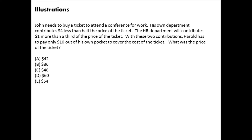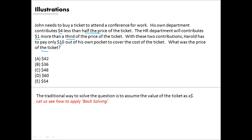John needs to buy a conference ticket. His own department contributes four dollars less than half the price. The HR department contributes one dollar more than a third of the price. With these two contributions, John has to pay only ten dollars. We need to find the ticket price. After arranging the five options in order: 36, 42, 48, 54, 60 — we start with the central value, 48. If John ends up paying more than ten dollars, the ticket price is less than 48; if less than ten, it's more than 48.